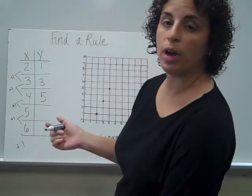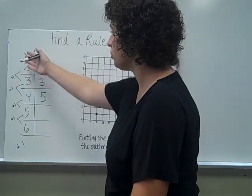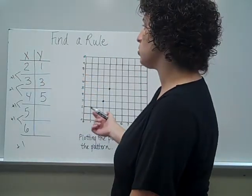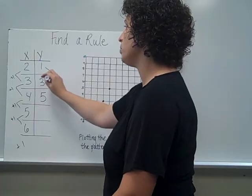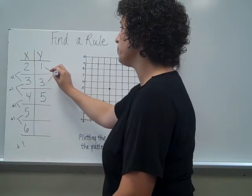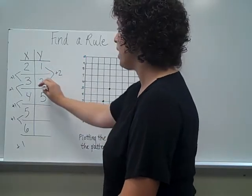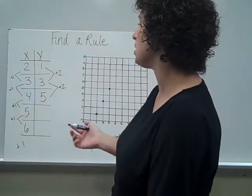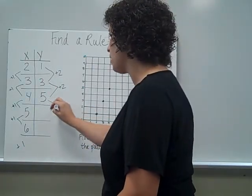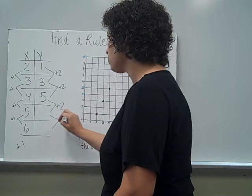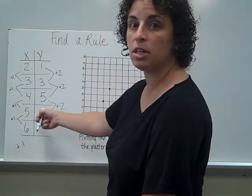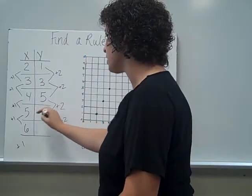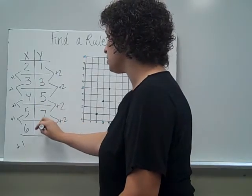And now I'm going to find another rule. There's a rule here for the x coordinates and a rule here for the y coordinates. So now let's look just at y. How does 1 become 3? That's plus 2. How does 3 become 5? Again, plus 2. It's a pattern happening here. So I'm going to continue the pattern and plus 2 two more times. 5 plus 2 would get me to 7, and 7 plus 2 gets me 9.